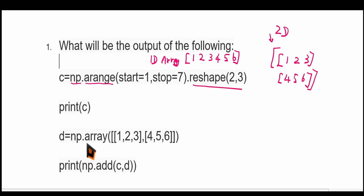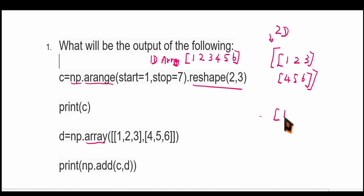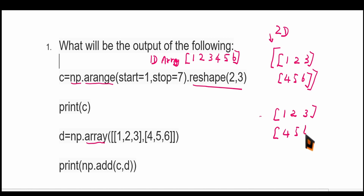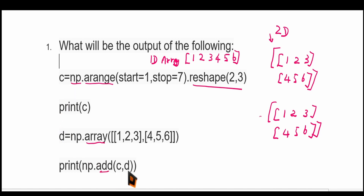Now here, array is also a function — it is creating an array. The array is like this: 1, 2, 3, then 4, 5, 6, and it is a 2D array. Now in this line, add C and D. When you use the add instruction, corresponding elements will be added.